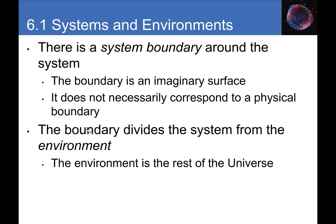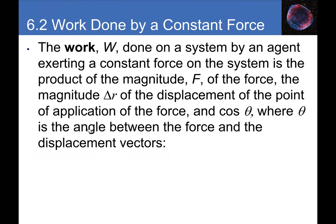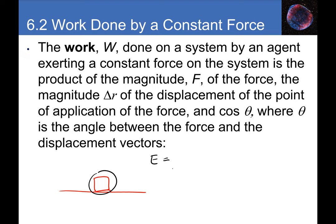Once we define our system — say, just the box — we consider energy E of the system. Energy can be due to motion, changing height, or changing shape. If the box isn't moving, isn't elevated above a reference, and isn't deformed, it has zero energy — no kinetic energy, no gravitational energy, no elastic energy, no chemical energy.